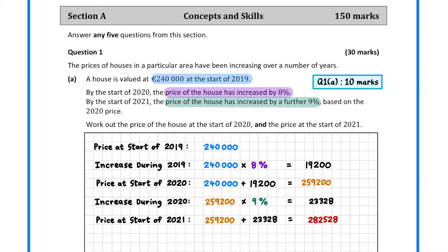In 2020, the price increases by a further 9%. To find the value of the increase, we multiply €259,200 by 9%. Then to get the price at the start of 2021, we add this on to our €259,200.